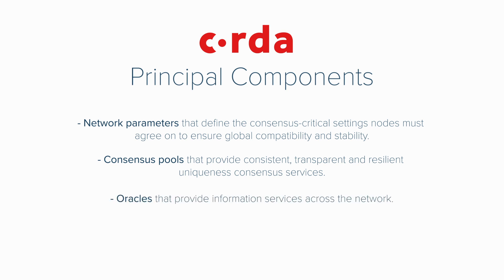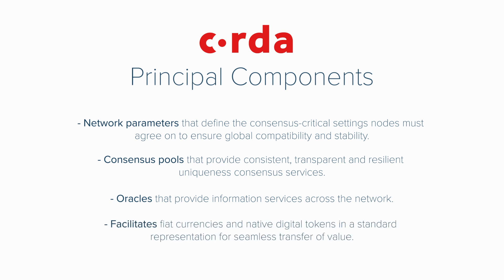The network enables oracles that provide information services across the network. Oracles are a source of information — basically a bridge between smart contracts on the chain and information off the chain. An example would be an oracle providing a smart contract with temperature values in a freight container filled with refrigerated goods — important information for not only those directly taking part in a supply chain, but also for the health and safety of consumers. Lastly, the global Corda network facilitates fiat currencies and native digital tokens in a standard representation for seamless transfer of value.